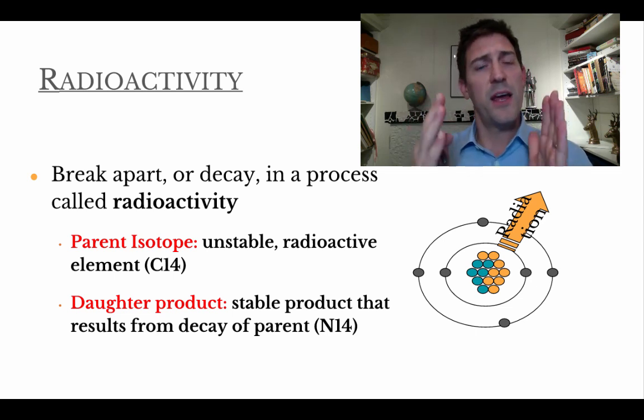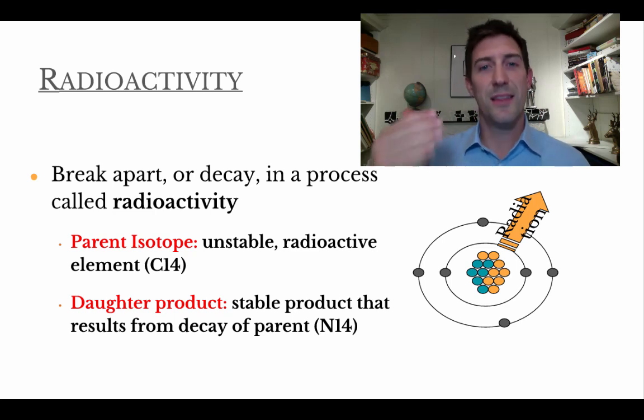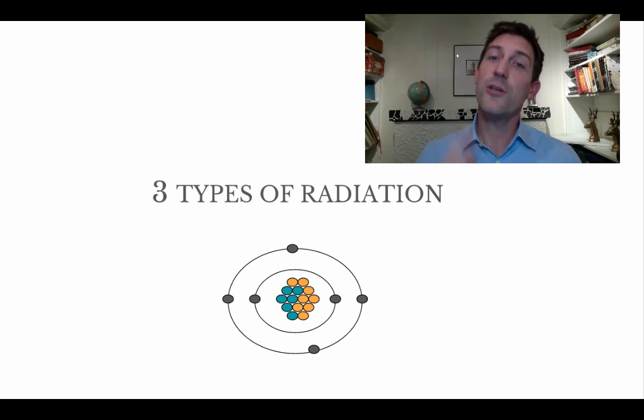And one of those is nitrogen-14. So how can carbon turn into nitrogen? Well, remember, if the number of protons changes, then the element changes. So there must be something going on there. Well, let's look at the three types of radiation and see if we can solve this puzzle, why carbon-14 is somehow turning into nitrogen-14.